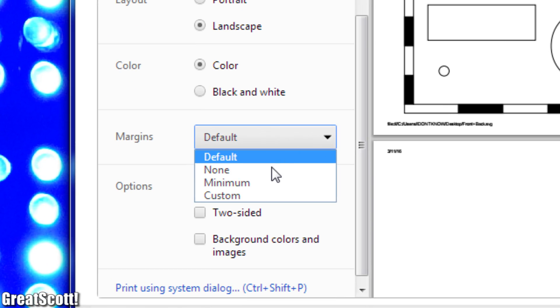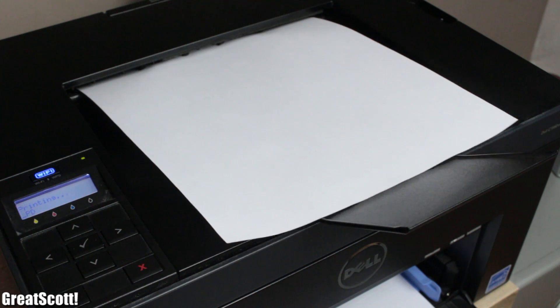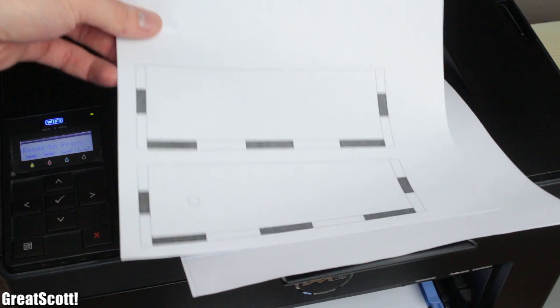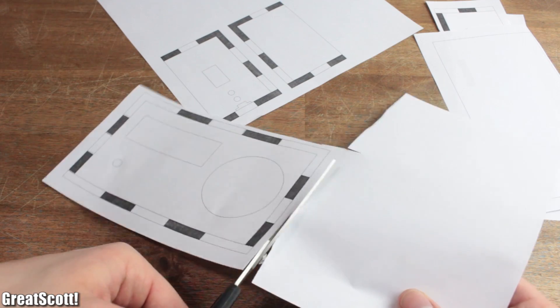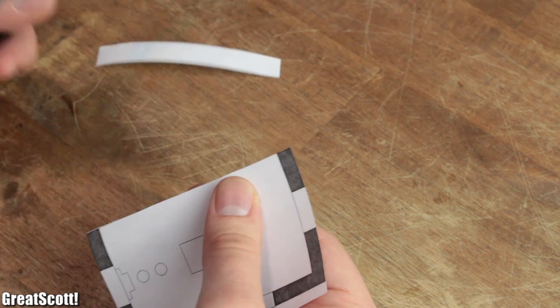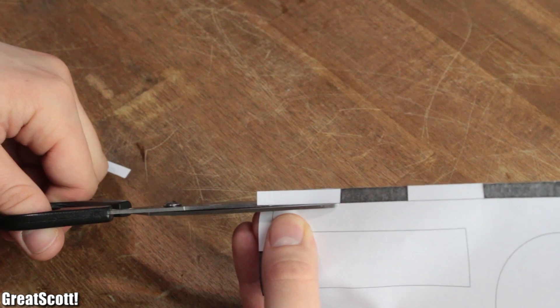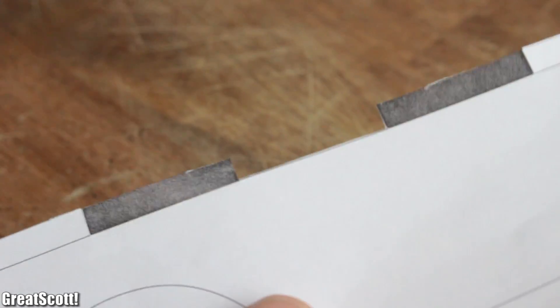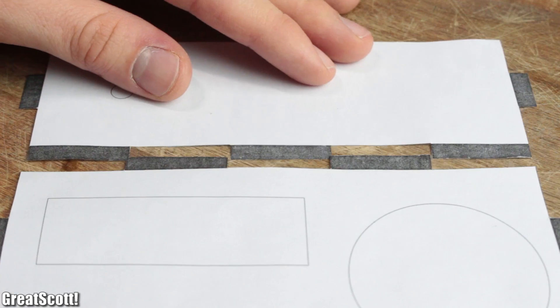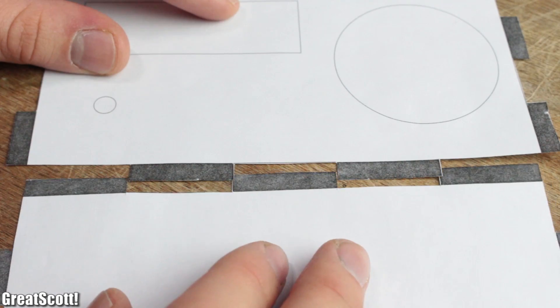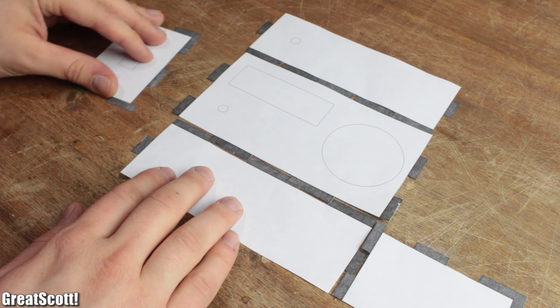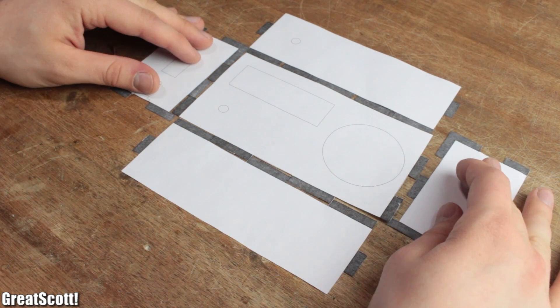And make sure to not use any margins, otherwise the size of the vector graphics gets scaled down. Afterwards I used scissors to firstly cut out the rough shape of all the pieces and then remove the white parts of the square wave pattern. At this point I was capable of checking whether this locking system would really work the way I imagined it and surprisingly it did.